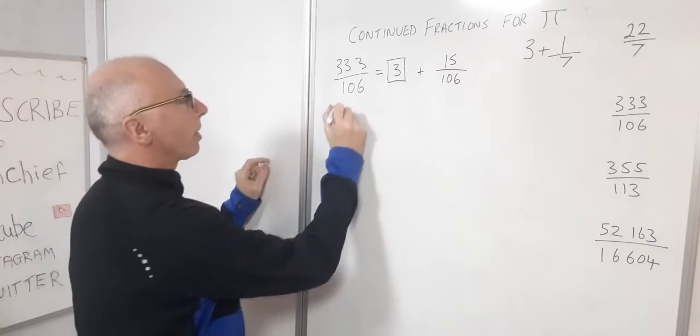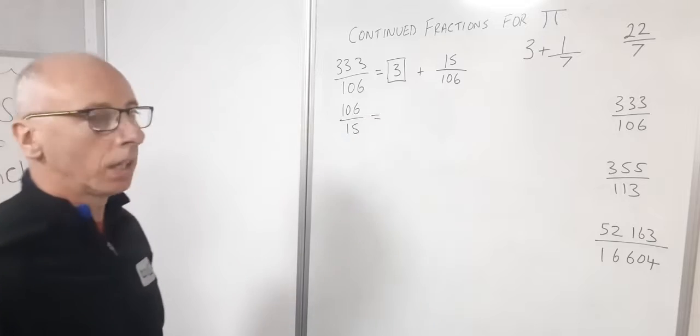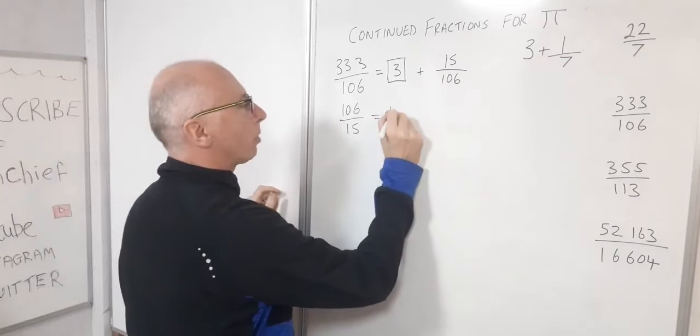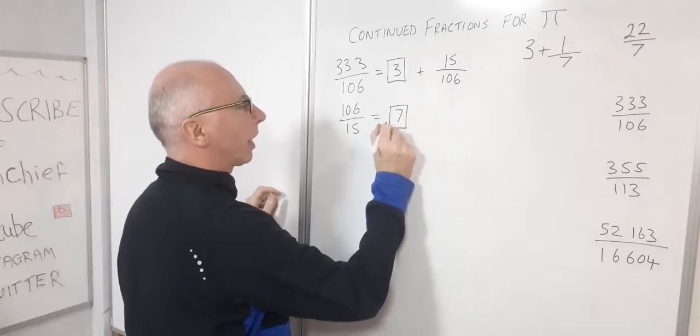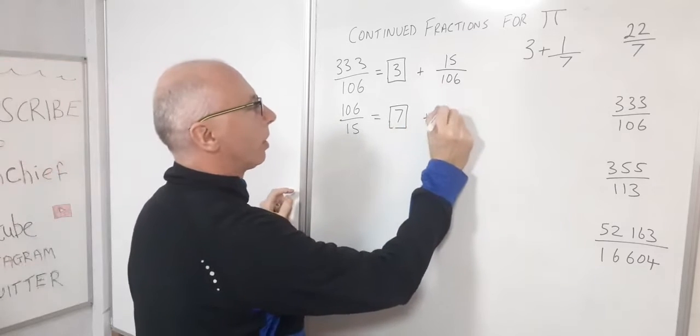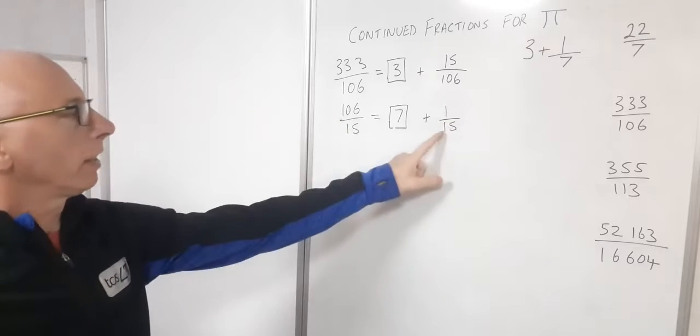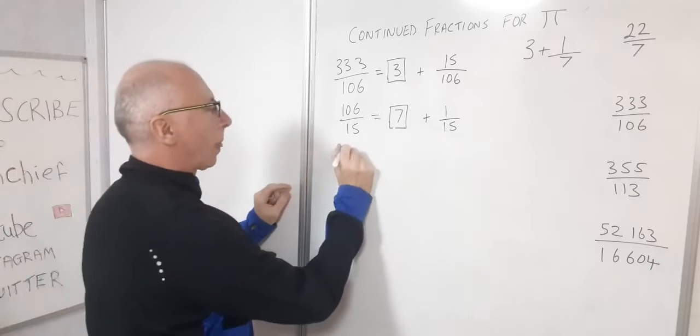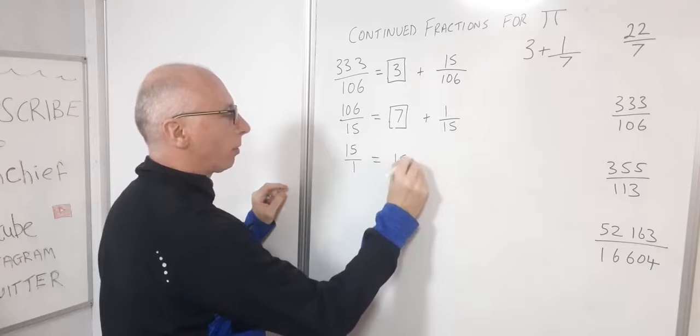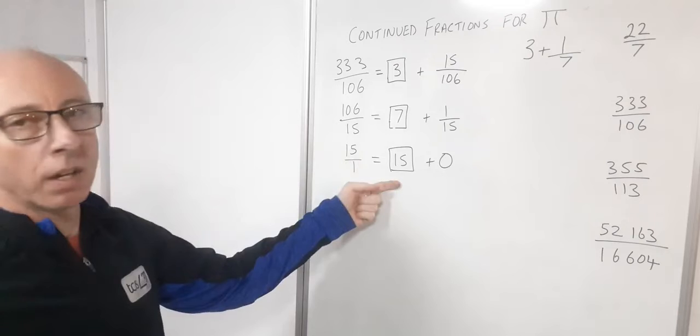Let's bring this over here as its reciprocal, so 106 over 15. 106 divided by 15, I know 7 times 15 is 105, so my integer part will be 7. Put that in a box and then our remainder is 1, so that gives us 1 over 15. That's this line finished. Now I bring this 15 over here, so 1 over 15 becomes 15 over 1, and straightaway we can see 15 is our integer part with 0 left over. So that's the first part completed.